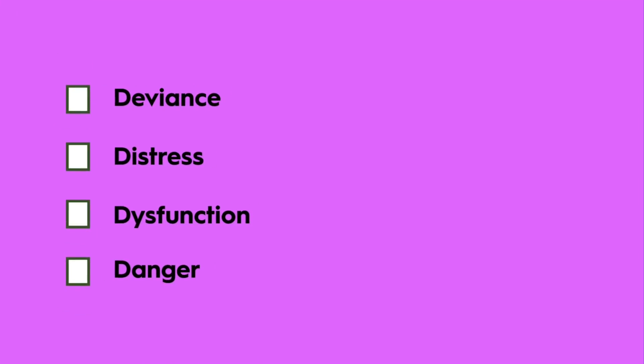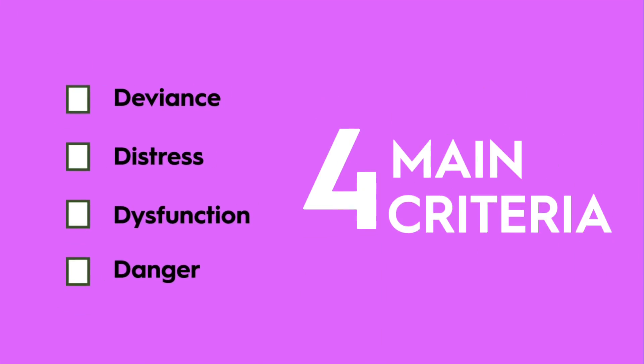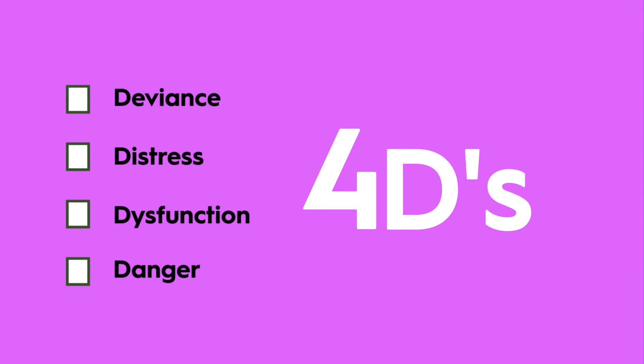Together, these four indicators, also called the 4 Ds, help clinicians decide when a behavior might signal a deeper issue. We've clarified how the four Ds — deviance, distress, dysfunction, and danger — separate unusual from truly abnormal.